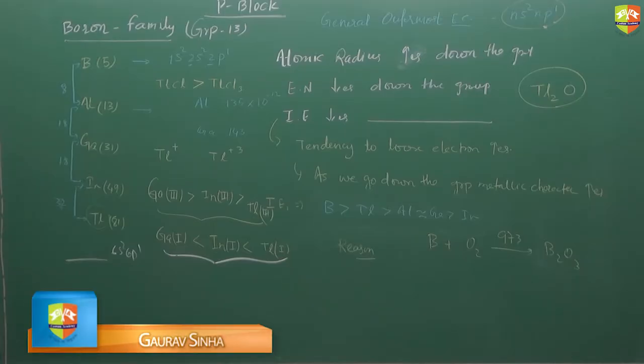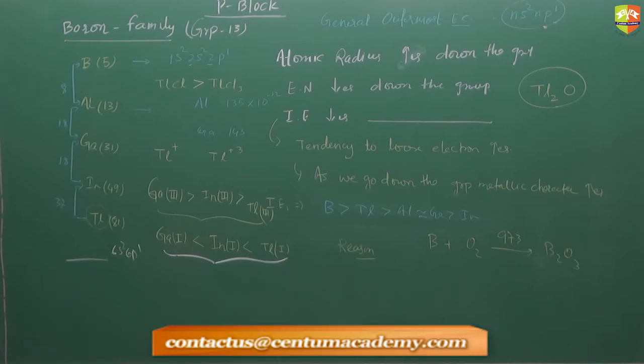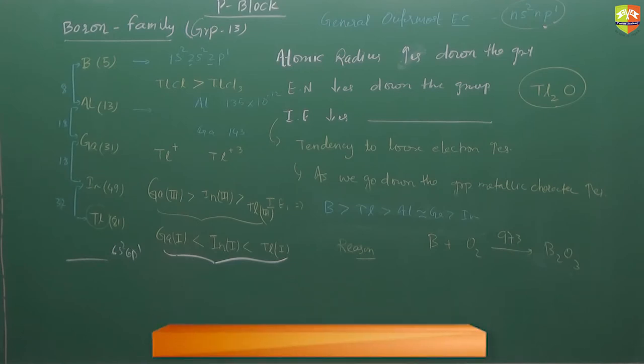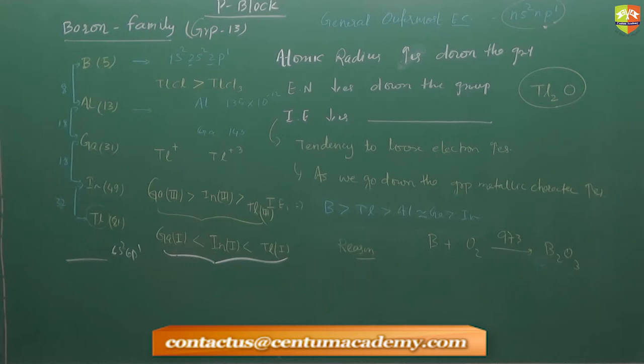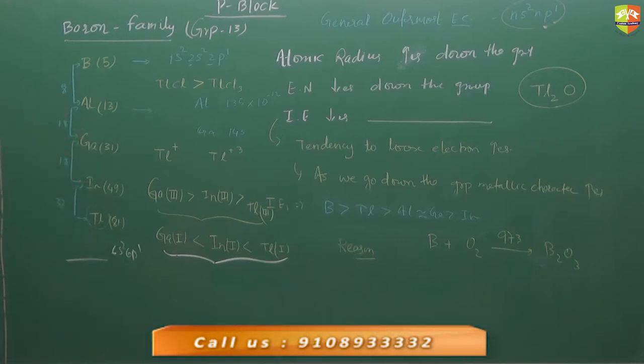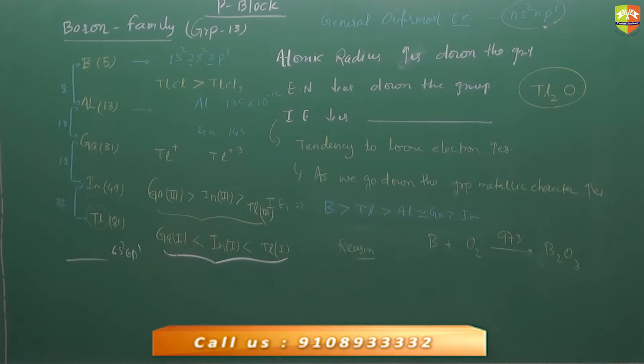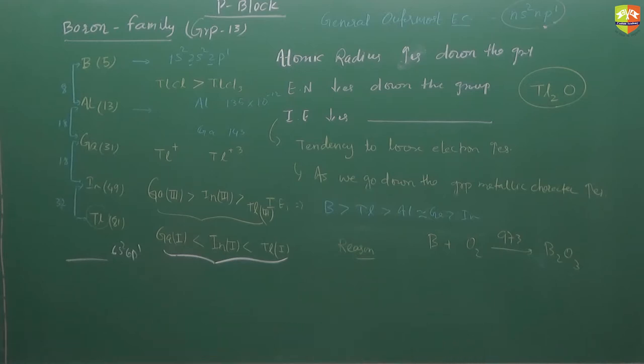Next, write down reactivity towards acid and alkali. In organic chemistry, exceptions are important. They won't ask you the general trend like ionization enthalpy decreases down the group. They will ask about exceptions, like electron affinity order of halogens. Wherever you are getting exceptions, write down.